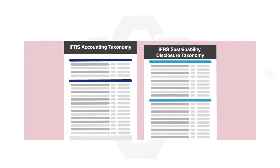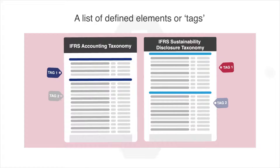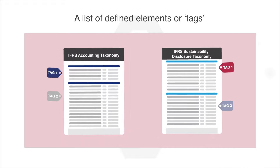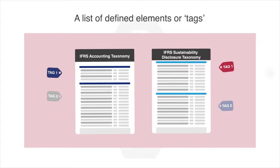The IFRS accounting and sustainability taxonomies provide a list of defined elements or tags that can be used to make information prepared in accordance with IFRS standards computer readable and therefore digitally comparable.